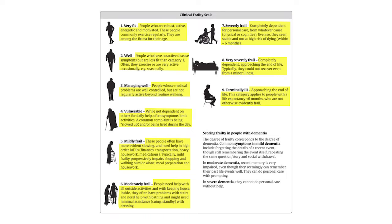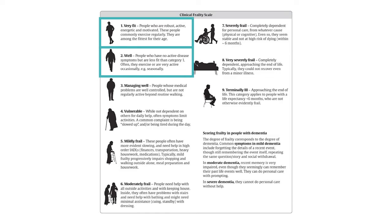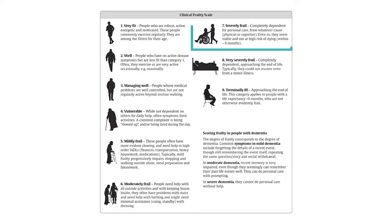I usually start by asking if people have services, as that's a good way to assess the middle range of frailty. If people are completely independent and managing well at home then I go on to ask them about exercise, which increases their frailty scale to one or two. At the frailer end of this scale people can be completely dependent for personal care. Those are people who are severely frail and often in residential care.